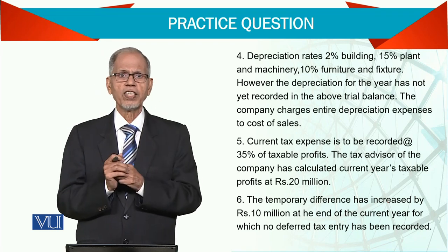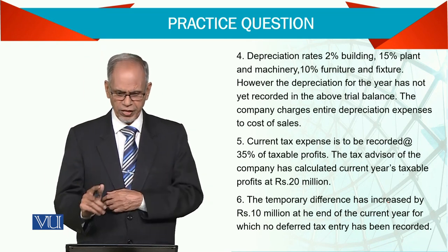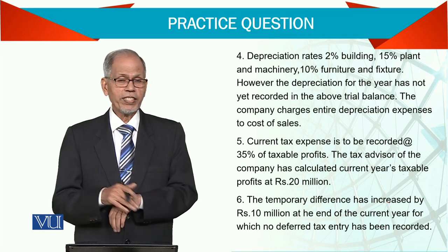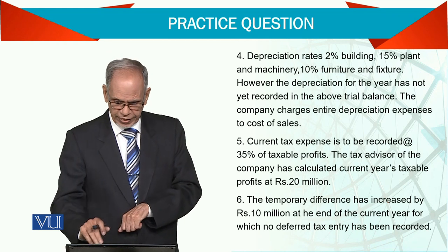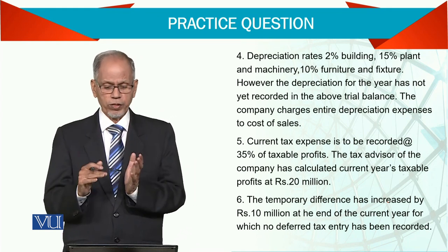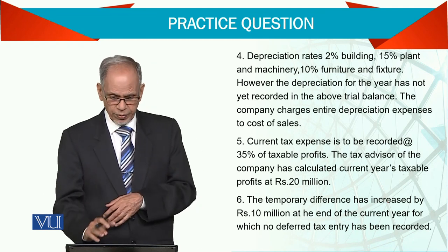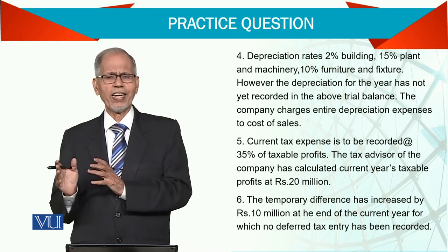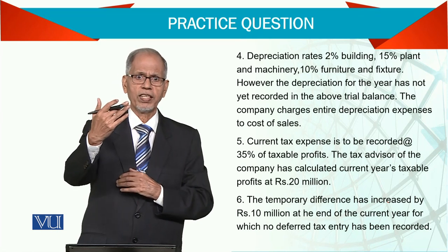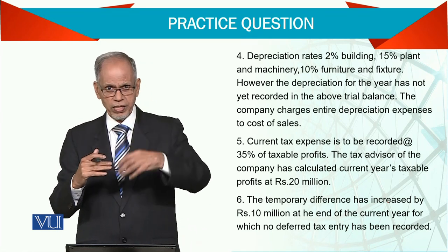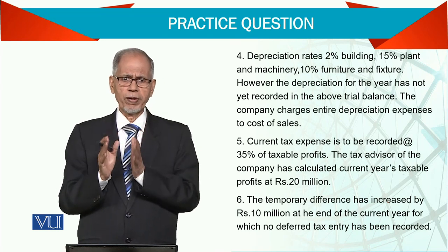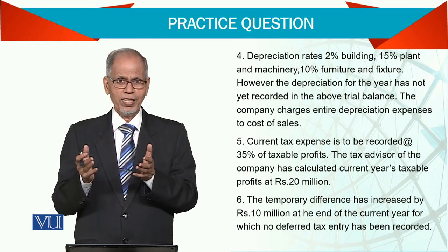Current taxation is provided at the rate of 35% of taxable profit. Unless you know the taxable profit, you cannot calculate 35%. The company's tax advisor has calculated the current year's taxable profit and provided the figure, so you charge 35% of that and make a provision. Similarly, temporary differences have increased by 10 million. If there are temporary differences — such as between accounting depreciation and tax-allowable depreciation — we calculate the deferred tax account. Deferred tax is not paid immediately; it will be adjusted in the future.